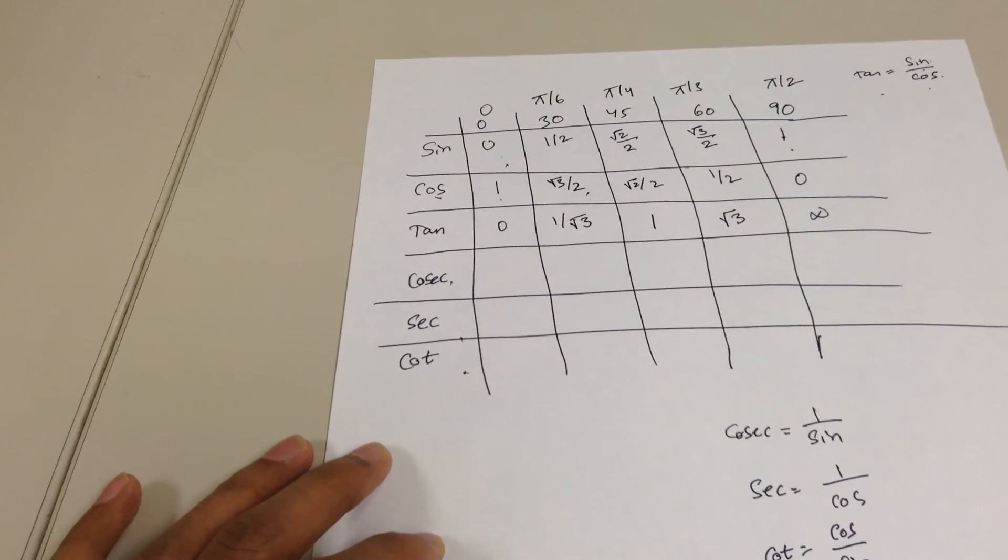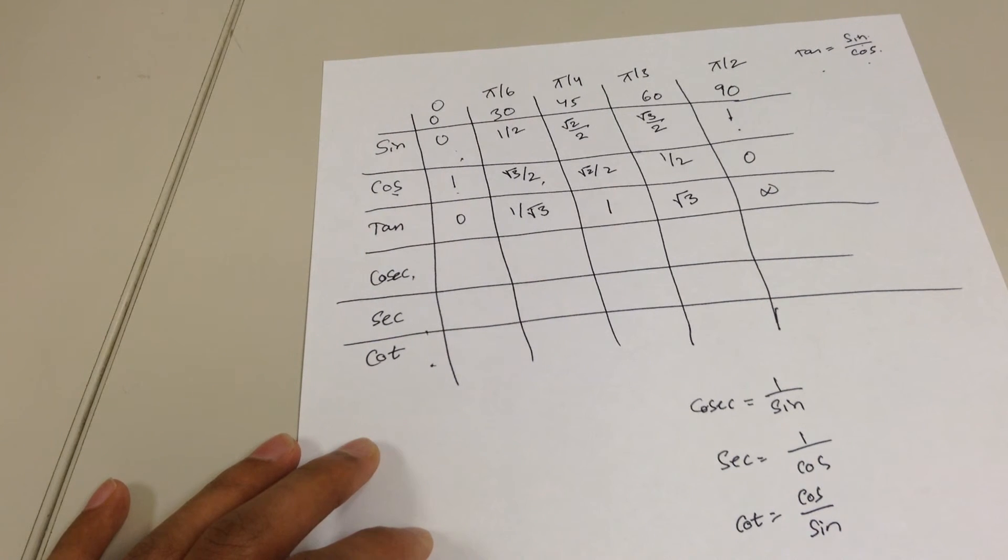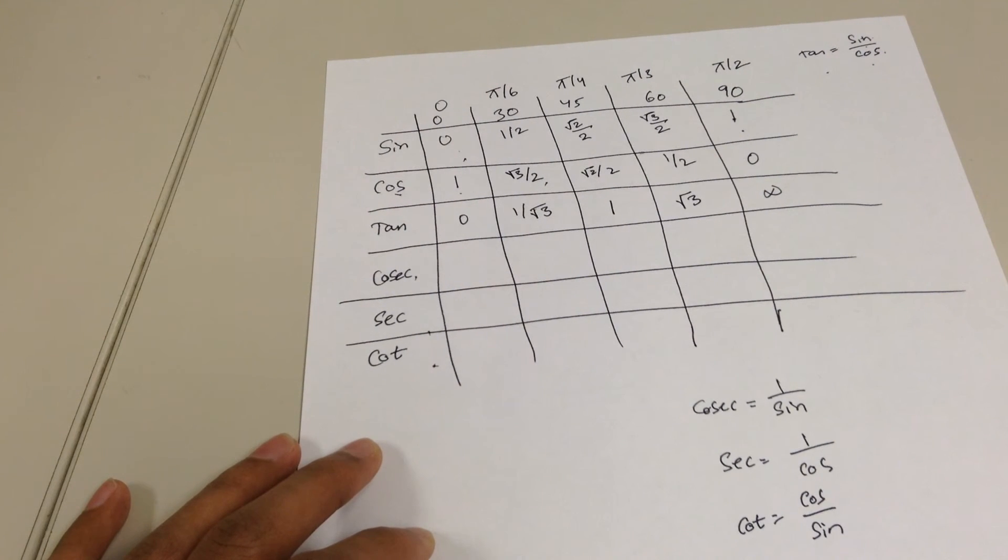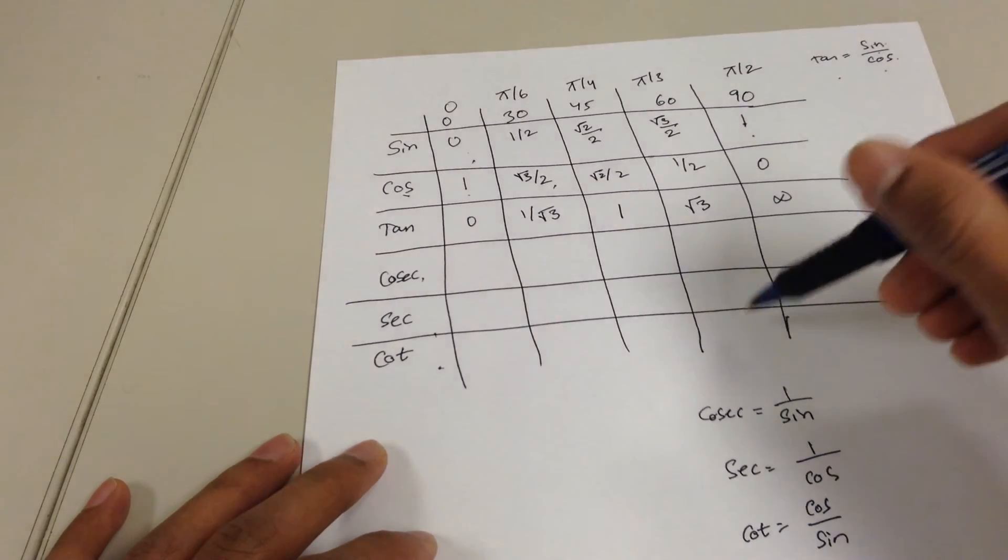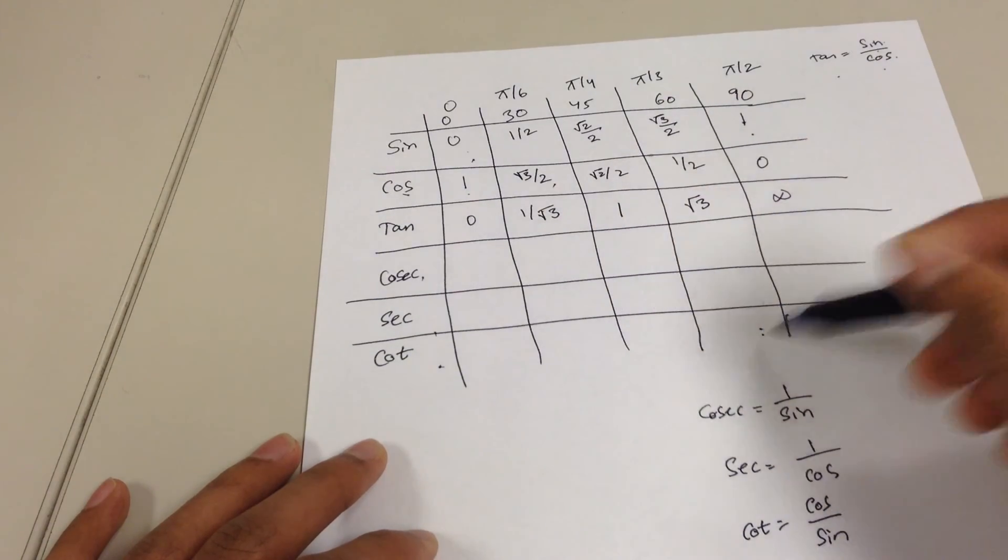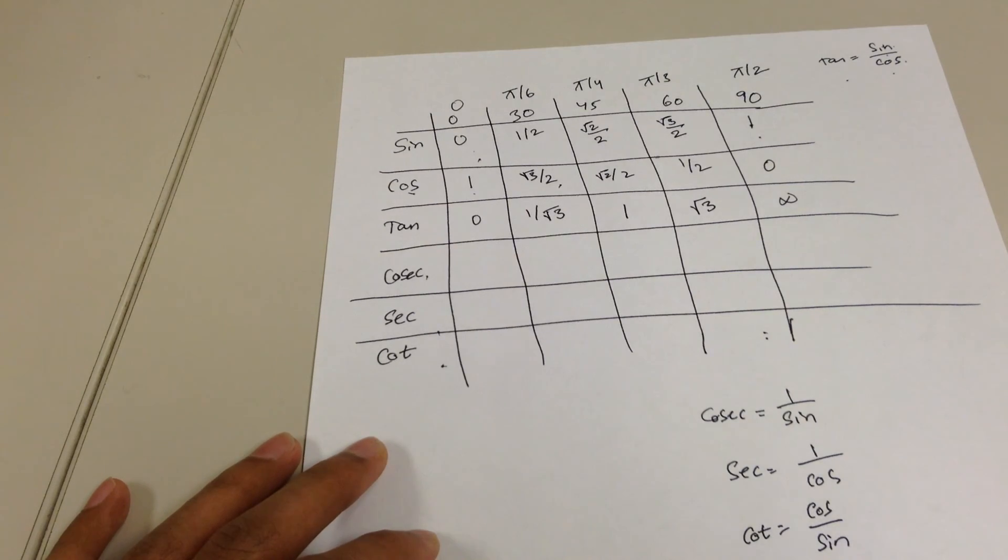So I hope that's helpful, and you should be able to generate this table whenever you get a test, and you won't ever have to go through the unit circle. You know, I think unit circle is kind of messy. Well it is good to know, but I think it's the best way if you memorize all these angles, and this is the best way to do it. That's how I learned it, so I think it was helpful for you.